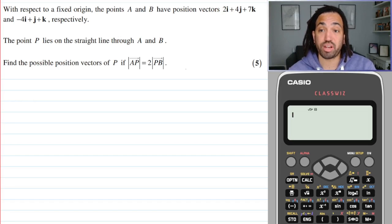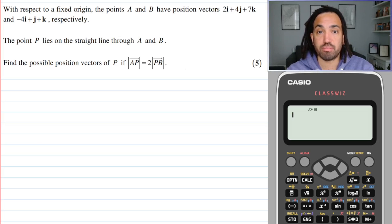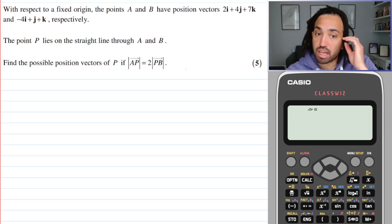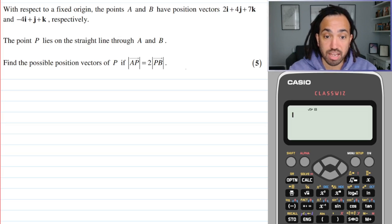Hello, my name is Mr. Asprey and today is a quick fire vectors question. We have the points A and B and we have position vectors given. It says P, the point P lies on the straight line through A and B.